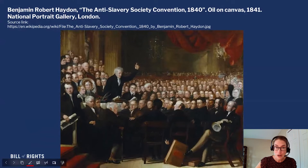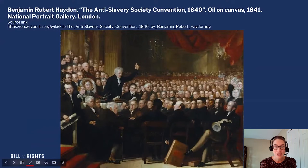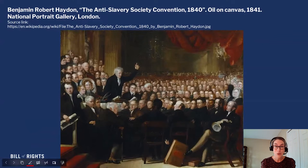Here's our image. It's entitled The Anti-Slavery Convention, 1840. It's by the artist Benjamin Robert Hayden, and it hangs in the National Portrait Gallery in London. We're thinking about the connection between this painting of this event — an anti-slavery meeting in 1840 in London, England — and the right of a woman to vote in the United States.